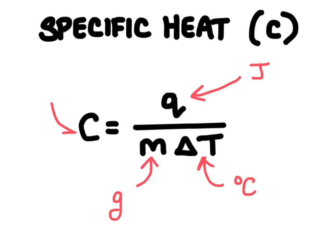The units for specific heat end up being joules per gram degree Celsius. So all of this is included as the unit for C. So when we calculate C, this is what we would put next to our answer.